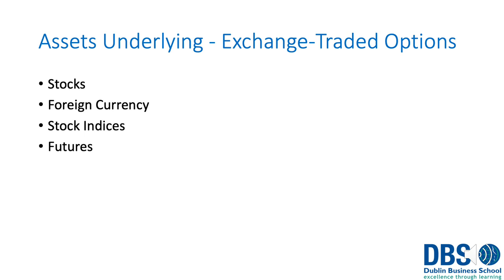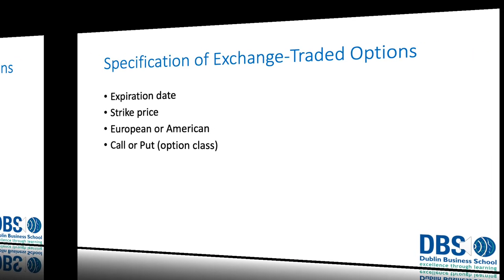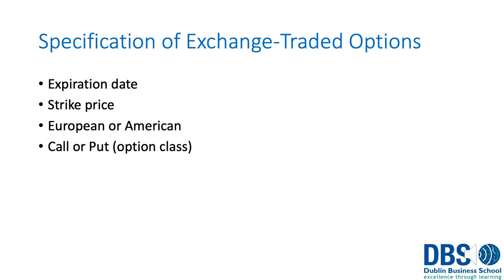There are lots of different types of assets that can underlie these options — stocks, foreign currencies, stock indices, futures, and more. The key specifications for traded options include an expiration date, a strike price, whether the option is European or American, and whether it's a call or put option.